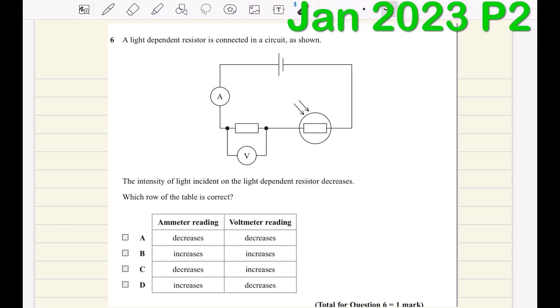Hi guys and welcome to our YouTube channel. Today we have January 2023 question six from A-level paper two. A light-dependent resistor is connected in a circuit as shown. This is the LDR, the light-dependent resistor.